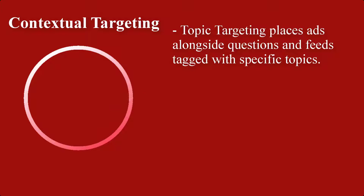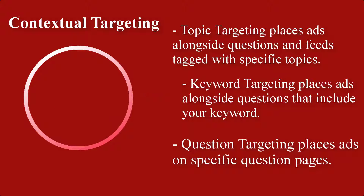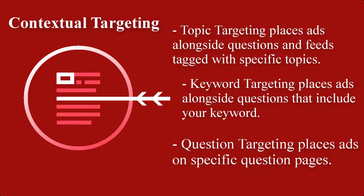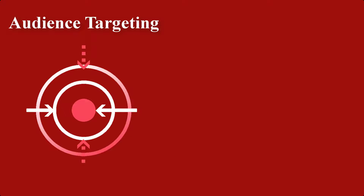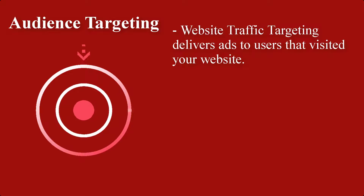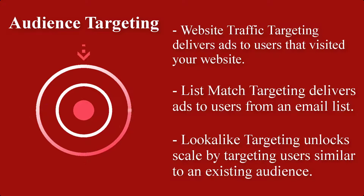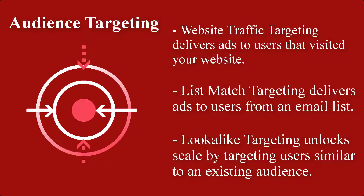For contextual targeting: topic targeting places ads alongside questions and feeds tagged with specific topics; keyword targeting places ads alongside questions that include your keyword; question targeting places ads on specific question pages. For audience targeting: website traffic targeting delivers ads to users that visited your website; list match targeting delivers ads to users from an email list; and look-alike targeting helps scale by targeting users similar to an existing audience.